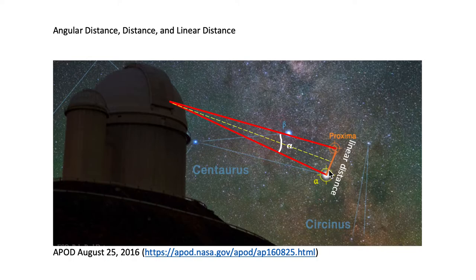They subtend an angular distance between the two stars, which is indicated from the observatory to Proxima Centauri (red line) and the observatory to Alpha Centauri (red line). The angle subtends this yellow curvature line, which we have labeled Alpha. That is your angular distance between the stars.